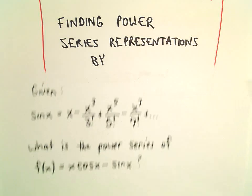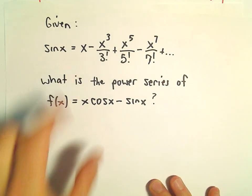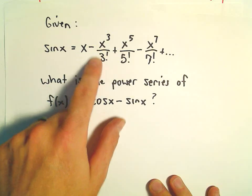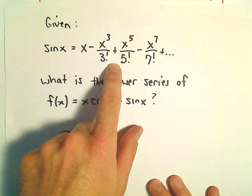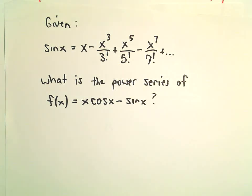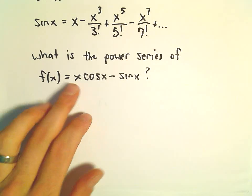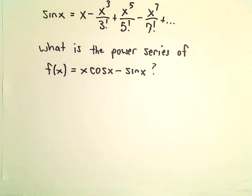In this example, we're given the series representation for sine x as x minus x to the third over three factorial plus x to the fifth over five factorial minus x to the seventh over seven factorial, etc. We're going to find a power series representation for the function x times cosine x minus sine x.